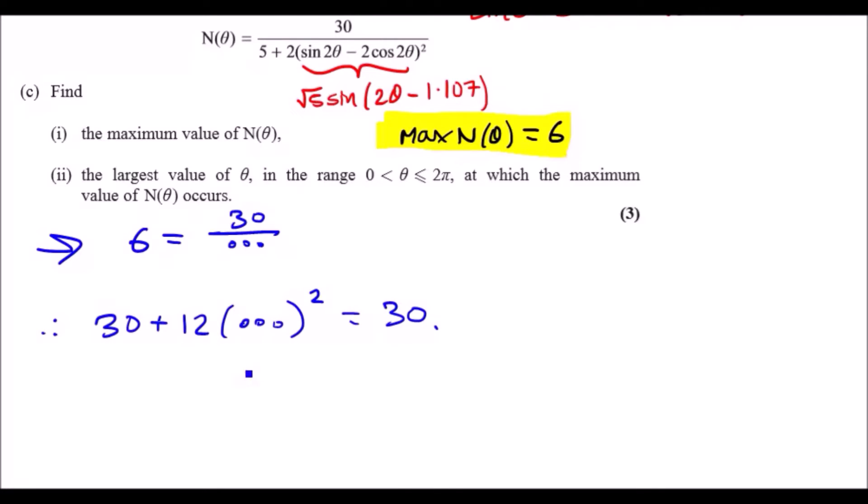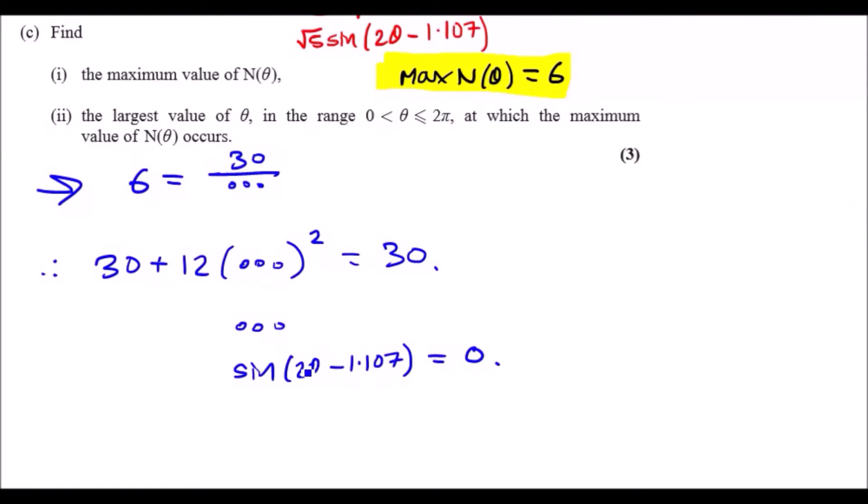So more or less just solve this: subtract 30 across is 0, divide 12 still 0, square root is still 0, so you're left with the dots which is the sine term, which is sin(2θ - 1.107) equal to 0.